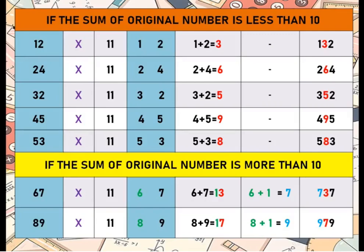Friends, here are some more examples to understand the concept. 12 into 11: the sum of the digits is 3, placed in between gives 132. 24 into 11: the sum of the digits is 5, placed in between gives 264. 45 into 11: the sum of the digits is 9, placed in between gives 495. 53 into 11: the sum of the digits is 8, placed in between gives 583.